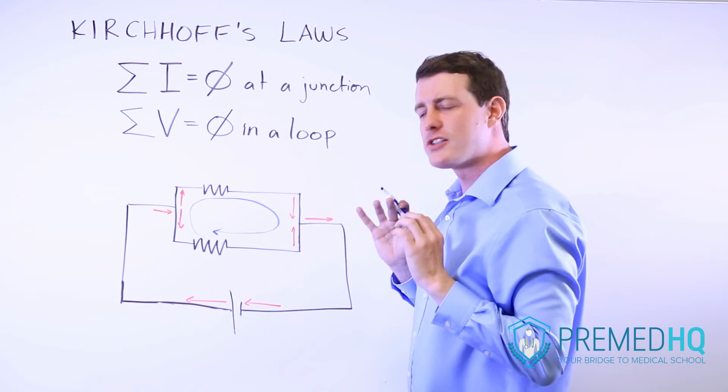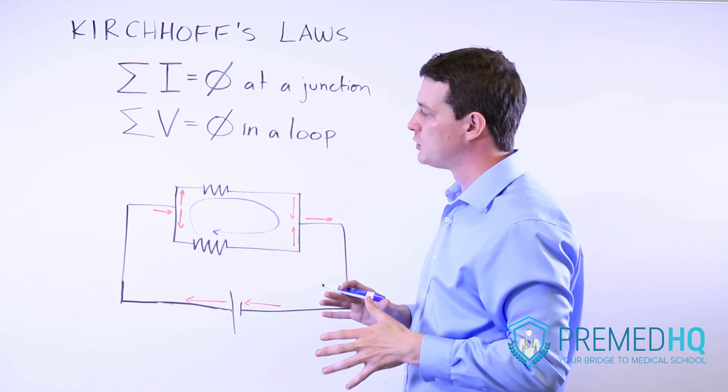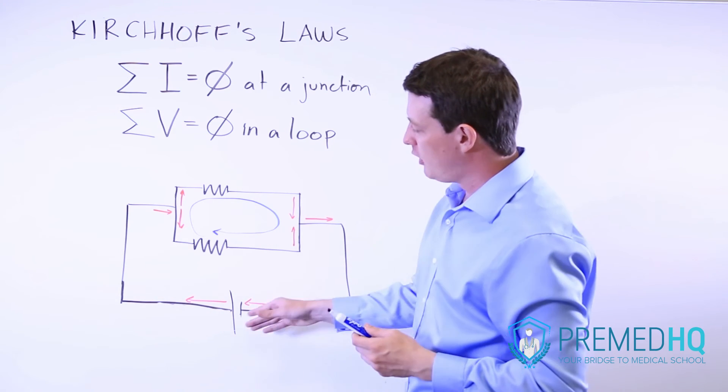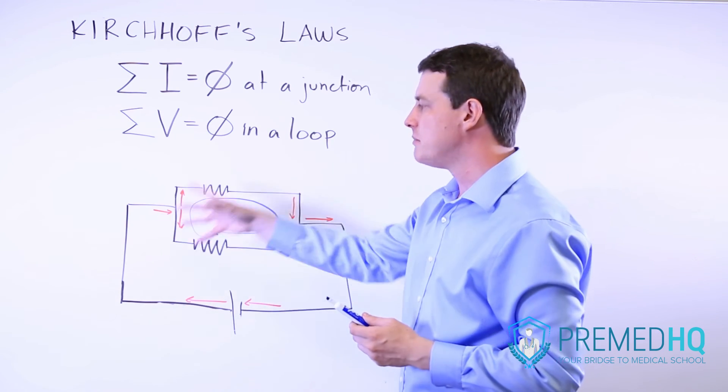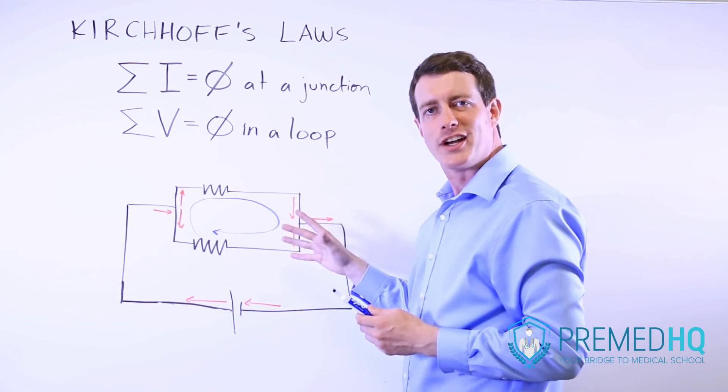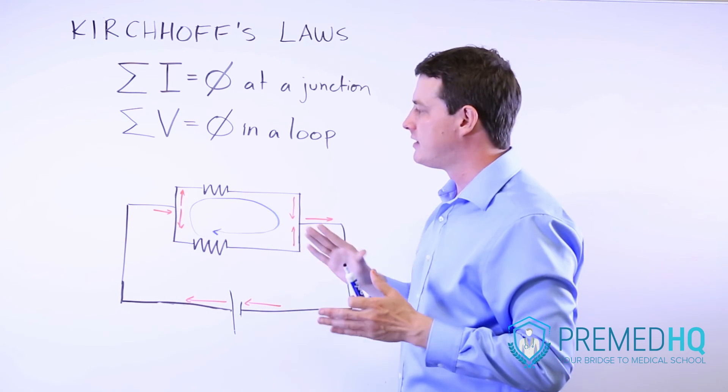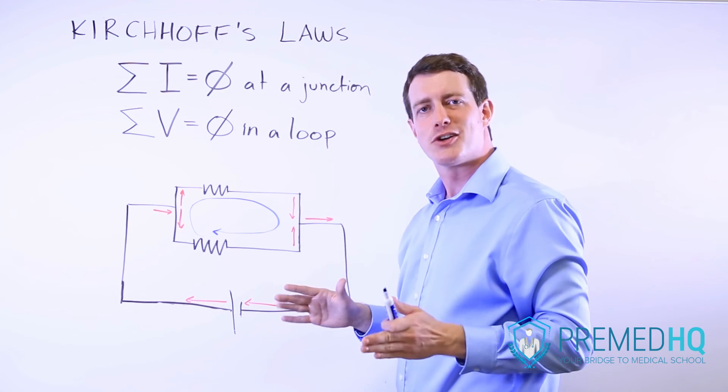And so as soon as you gain that familiarity with Kirchhoff's rules, realize that no matter what happens, all of the voltage added by the battery is going to be used up as you go through this circuit. And the other thing is that normally you can expect that it's going to be a 50-50 split of current...